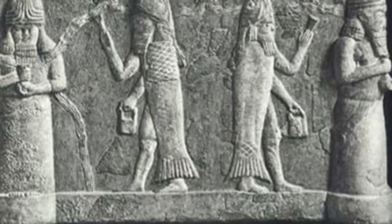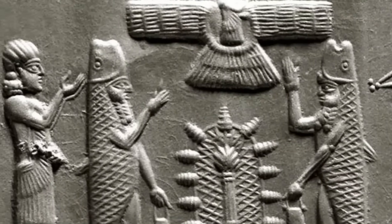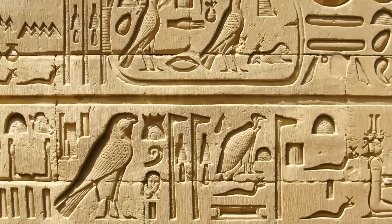The closest matches weren't modern icons, but ancient ones: Sumerian depictions of Awans, Egyptian hieroglyphs of the Watchers, symbols representing cosmic observers across early civilizations.